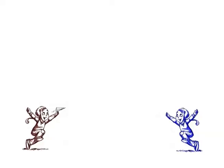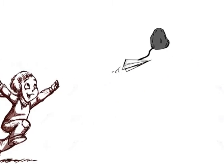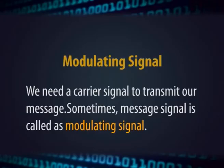For example, imagine a paper which contains a message and you would like to send it to your friend standing 30 feet away. You can't just throw the paper because it will not travel that distance. But if you take a stone and wrap the paper around it, then throw it, it will definitely reach the target. In the same way, we need a carrier signal to transmit our message — the message signal is sometimes called the modulating signal.